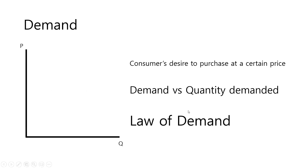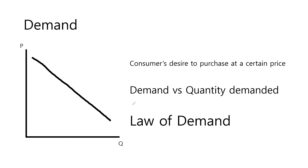First of all, let's talk about demand. The definition of demand is the consumer's desire to purchase at a certain price, and the demand graph is sloped downwards, which means if the price increases, the quantity decreases. Now there are two terms: demand and quantity demanded. What is the difference between those two?